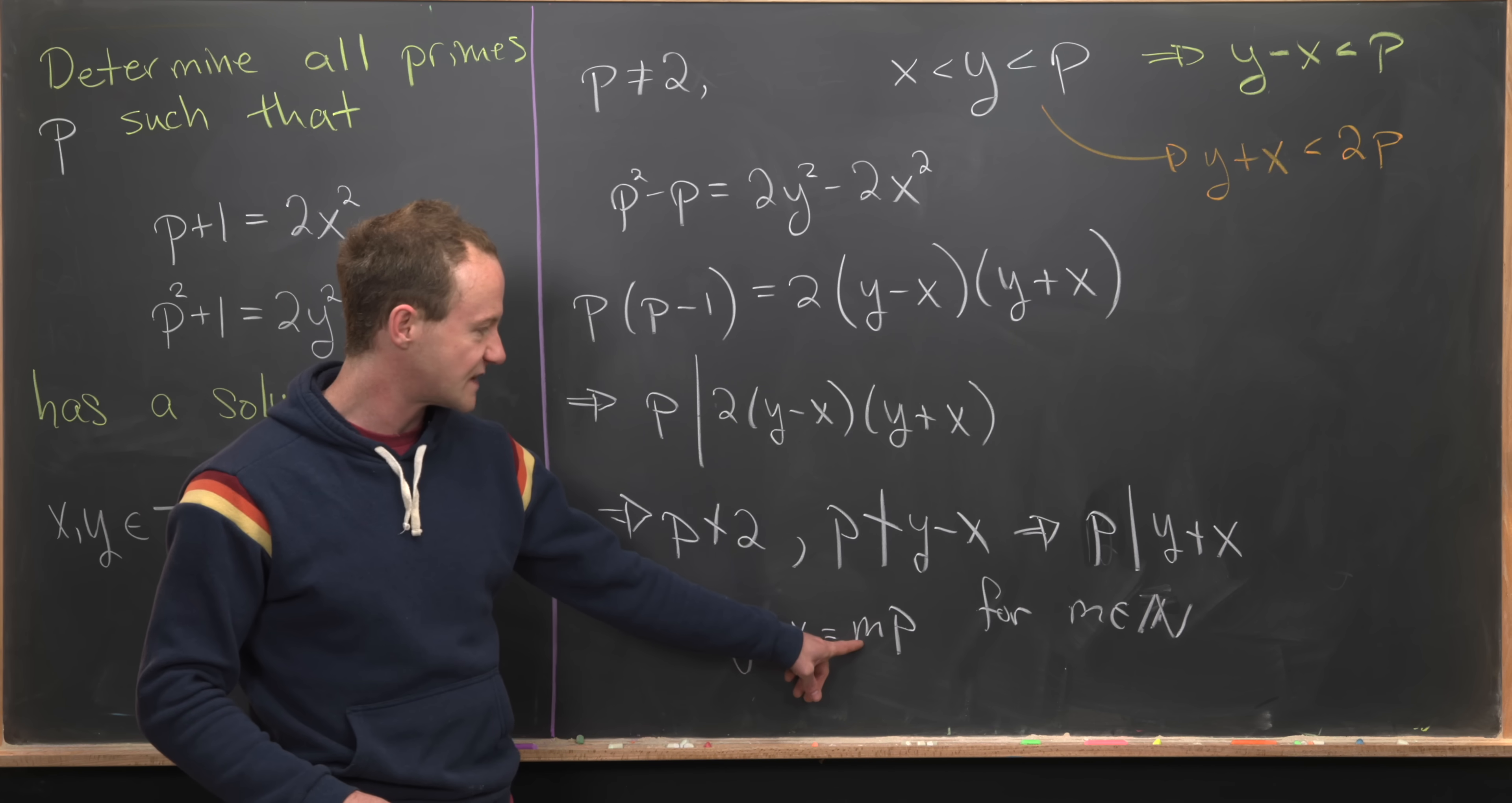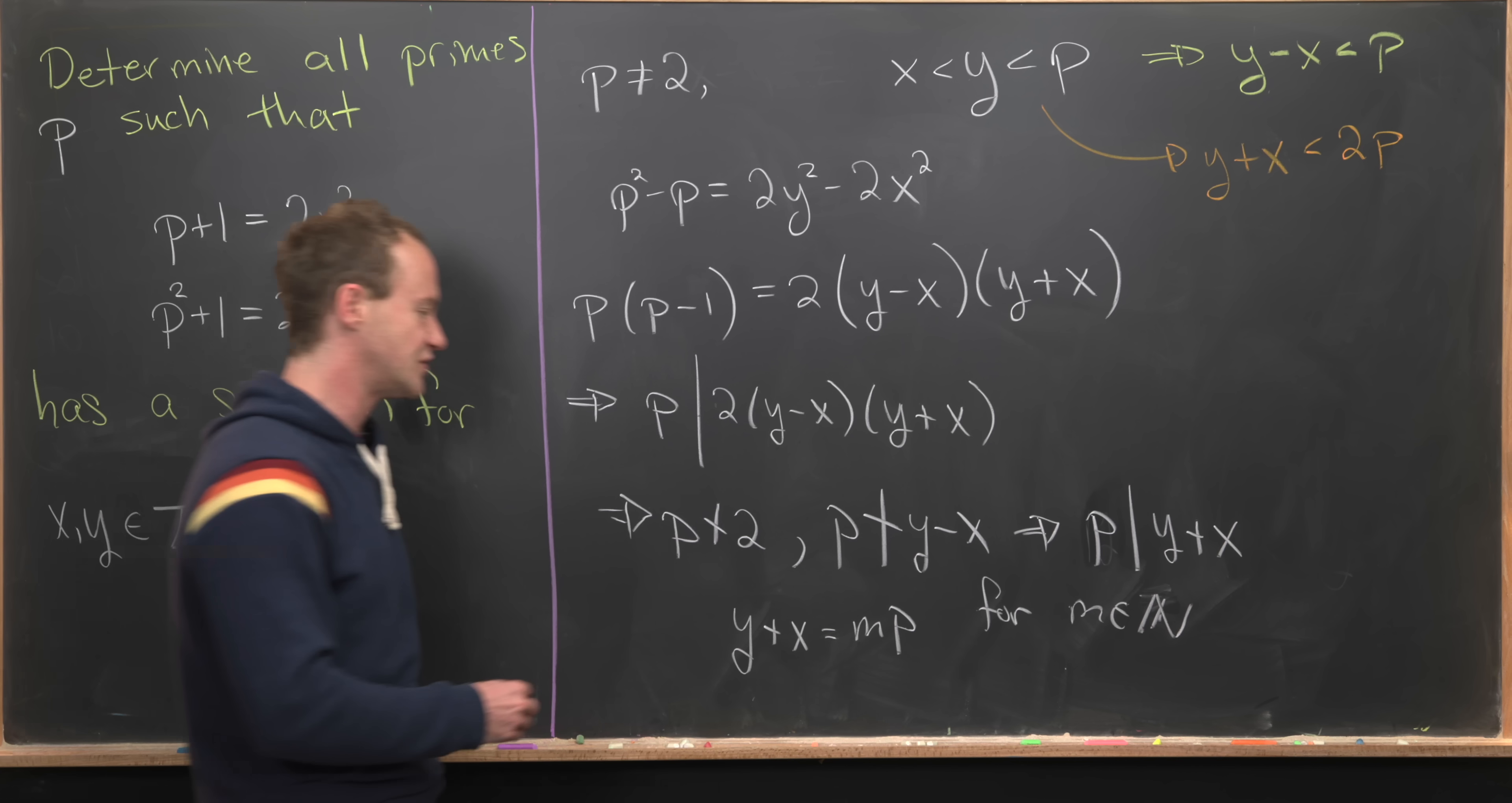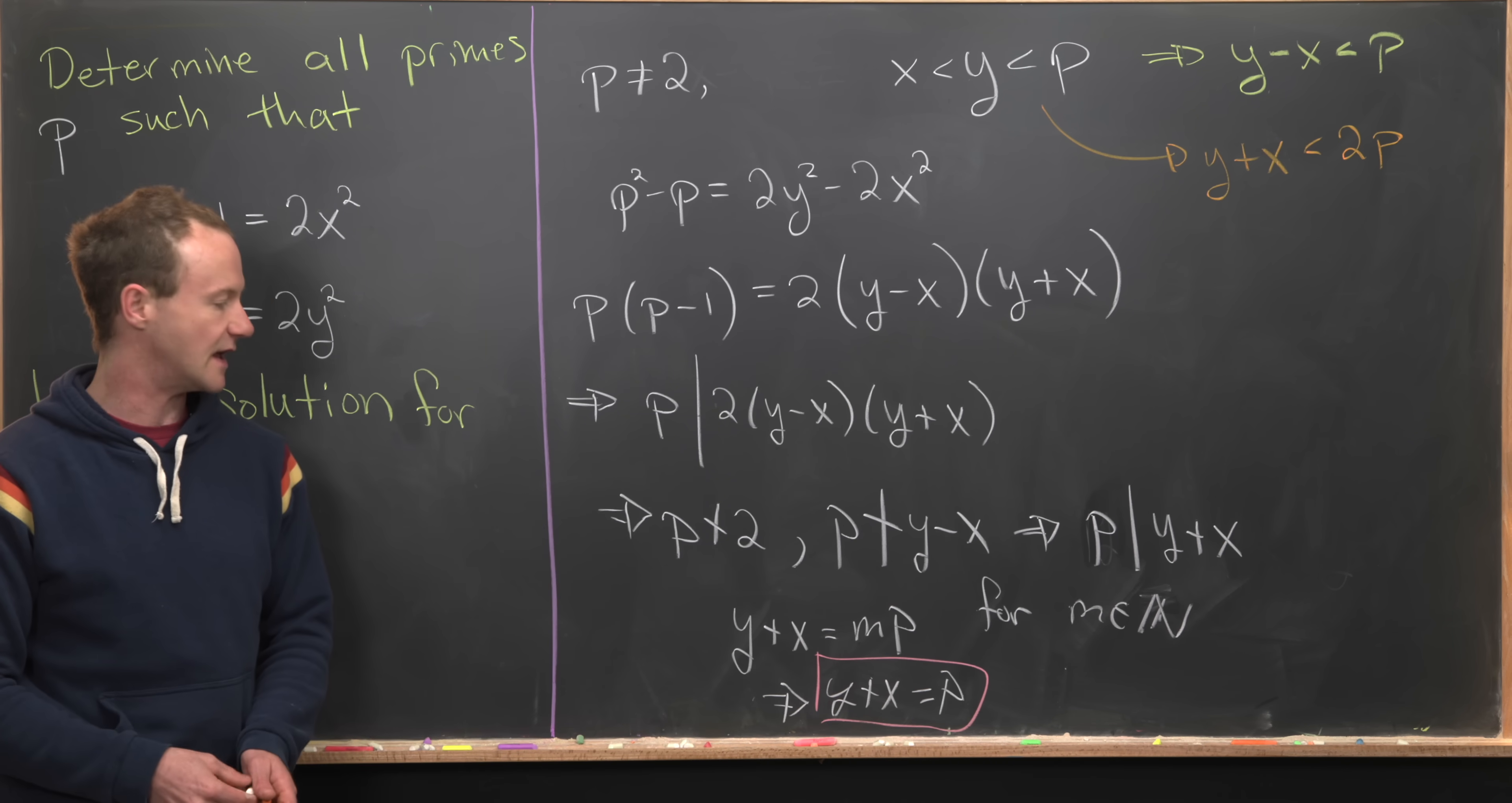What we'll see is that y+x is less than 2p. We have y+x equal to some natural number multiple of p, but it has to be less than 2p. There's only one natural number multiple of p that's less than 2p, and that is p itself. So y+x equals p.